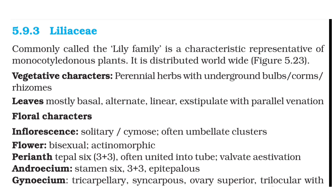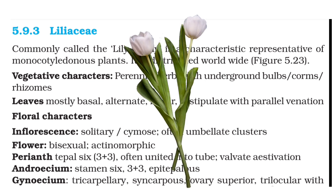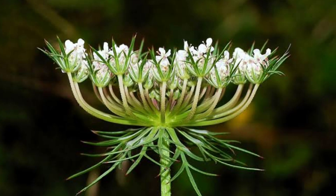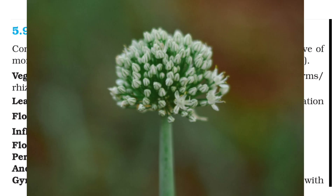Floral characters: Inflorescence is the arrangement of flowers on the floral axis. It can be solitary — only one flower, at the tip — and cymose, where the tip stops its growth and growth is taken over by lateral branches. Next is the umbellate cluster, which is not a true umbel. A true umbel is present in family Apiaceae. Here in Liliaceae, the inflorescence is umbellate — umbel-like but not a true umbel. This umbellate cluster can be observed in onion and is formed by aggregation of many monochasial cymes with scaly outgrowths.